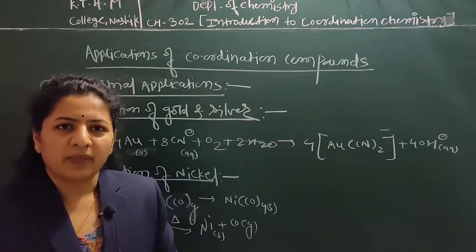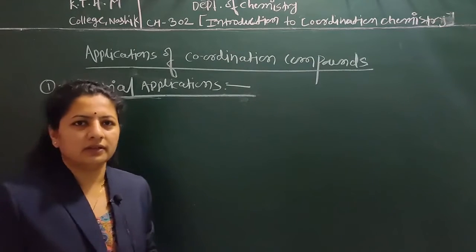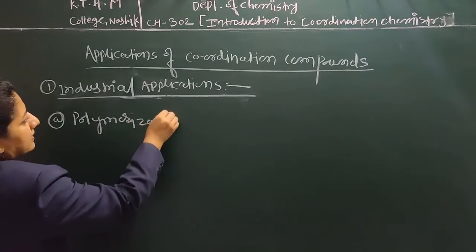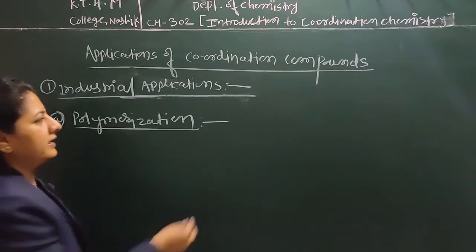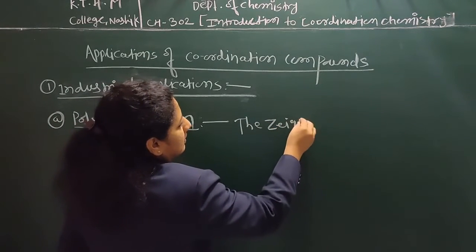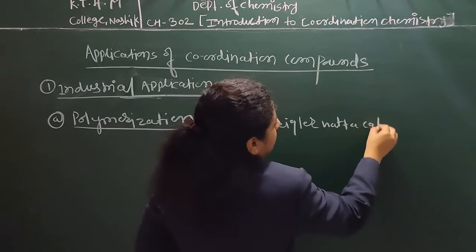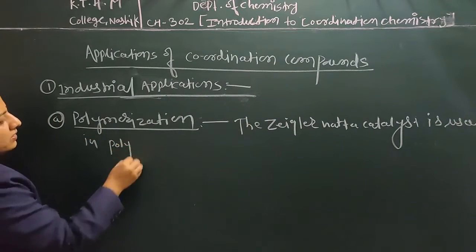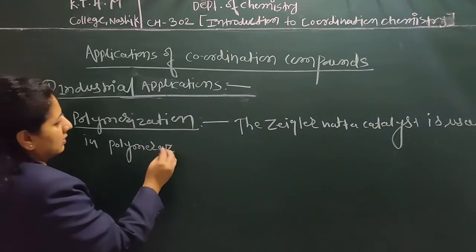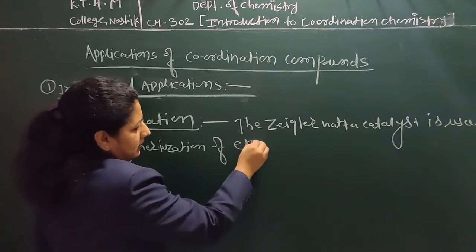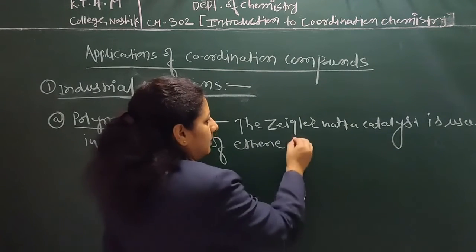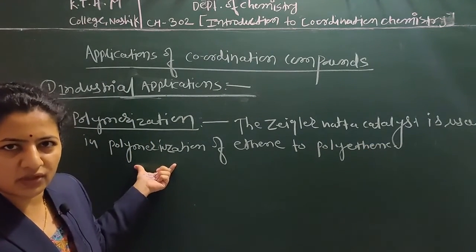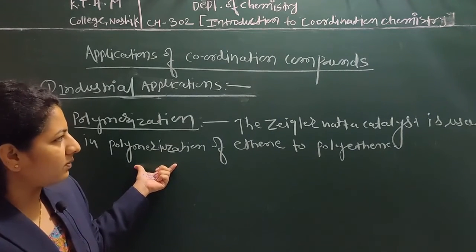The next application in industrial chemistry is in polymerization. In polymerization, one of the famous catalysts used is the Ziegler-Natta catalyst. This catalyst is used in the polymerization of ethylene to form polyethene. These are one of the most important industrial applications of coordination compounds, and the Ziegler-Natta catalyst forms a coordination compound with the respective ethylene and polymerizes it to polyethene.